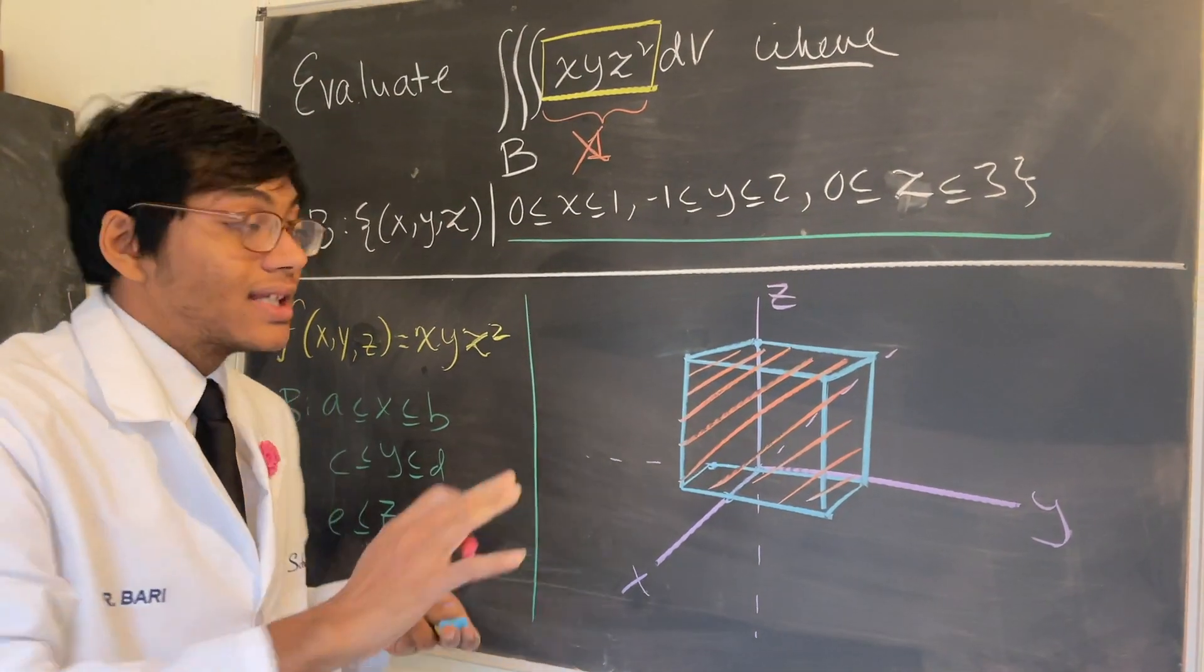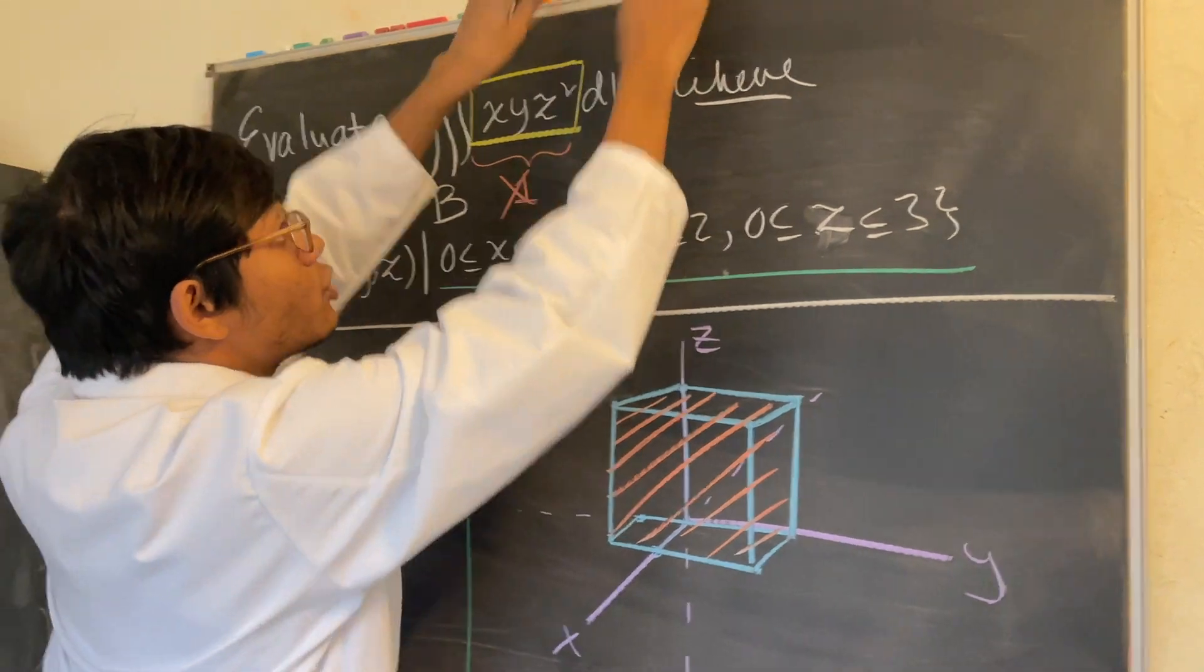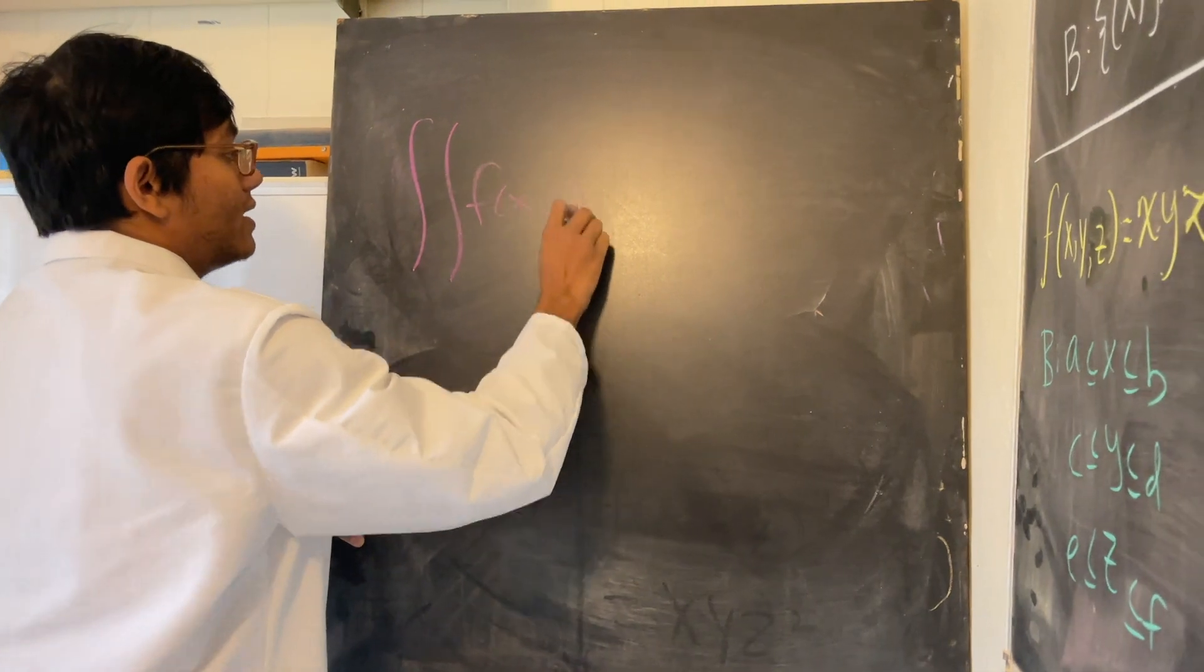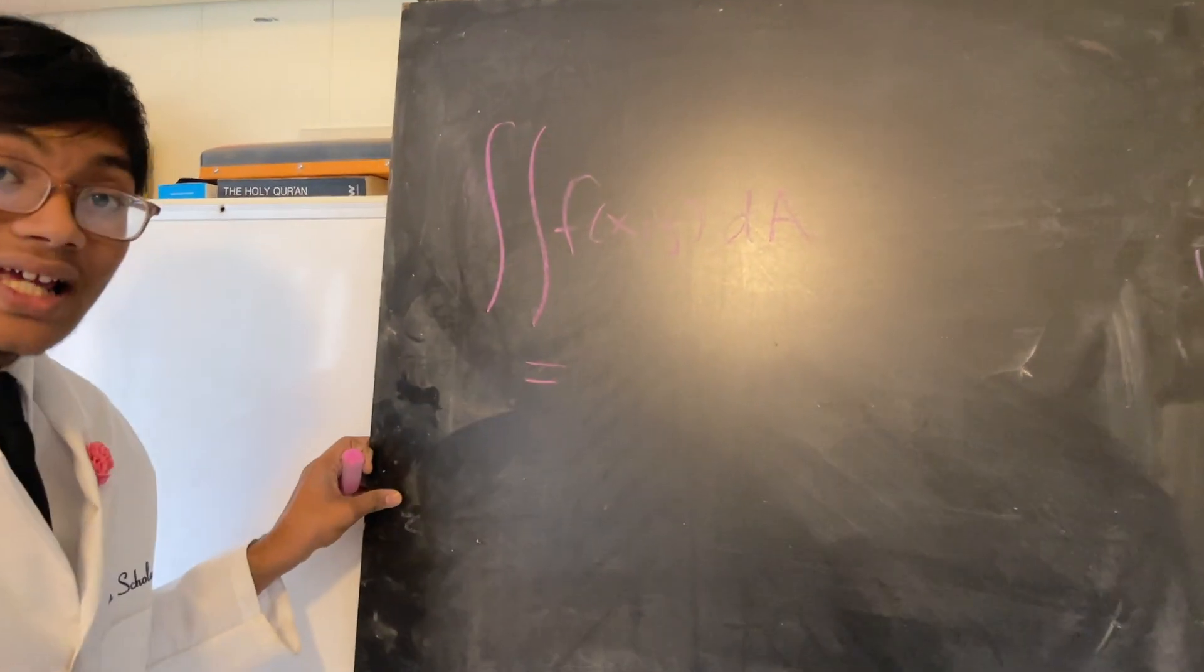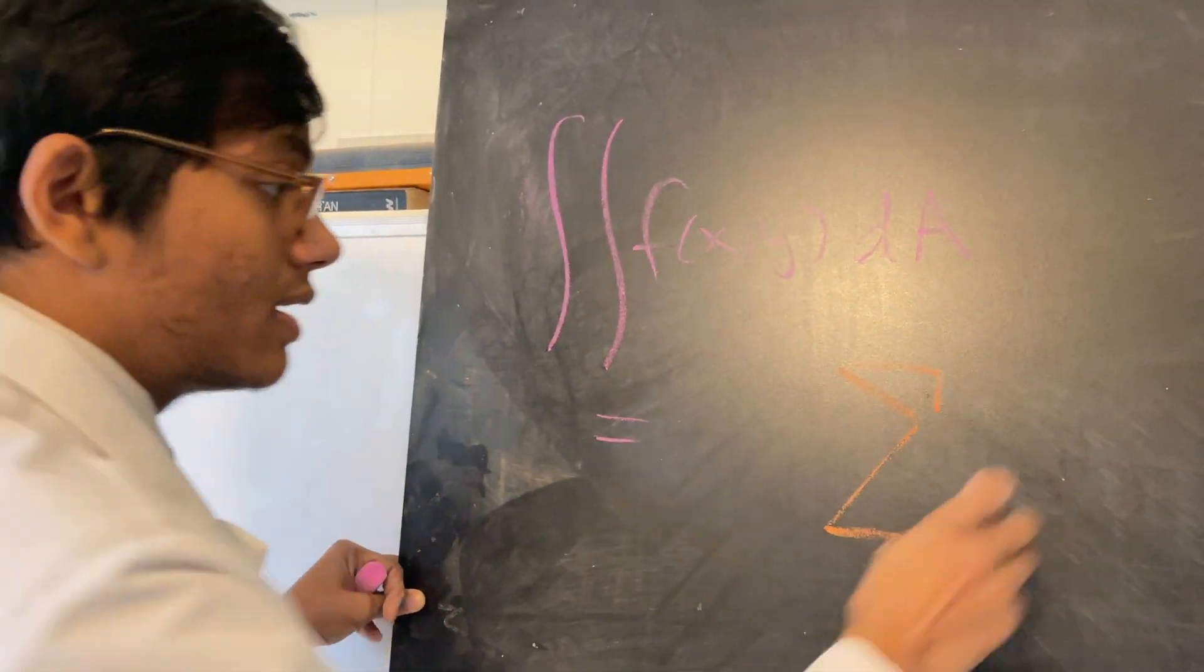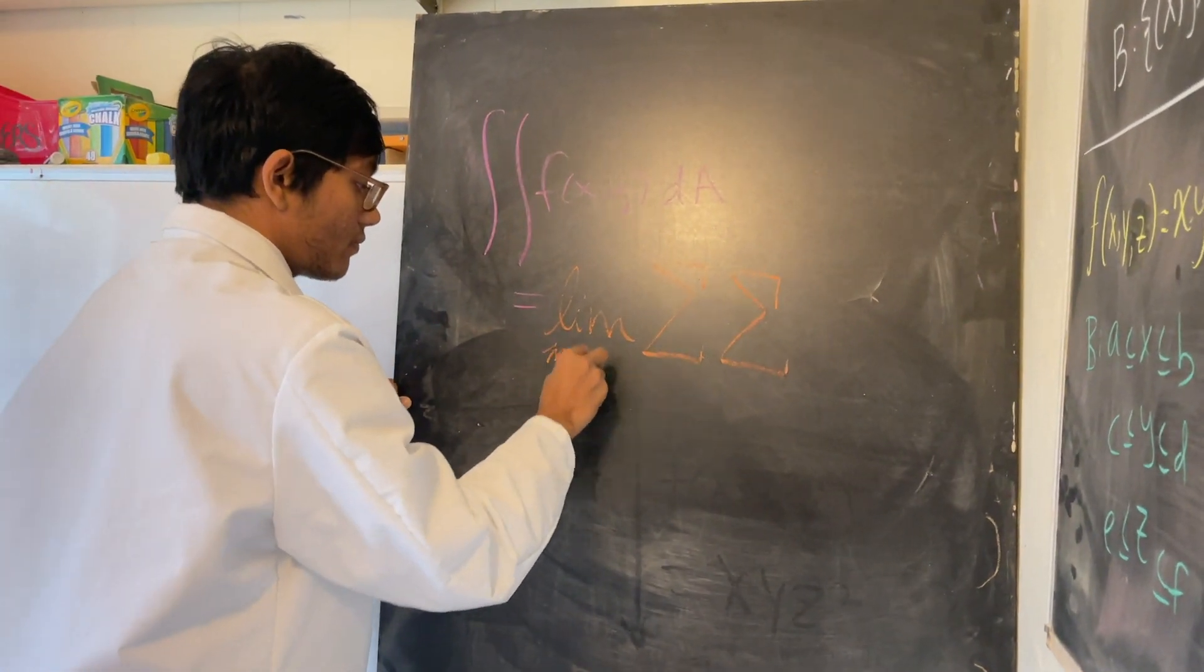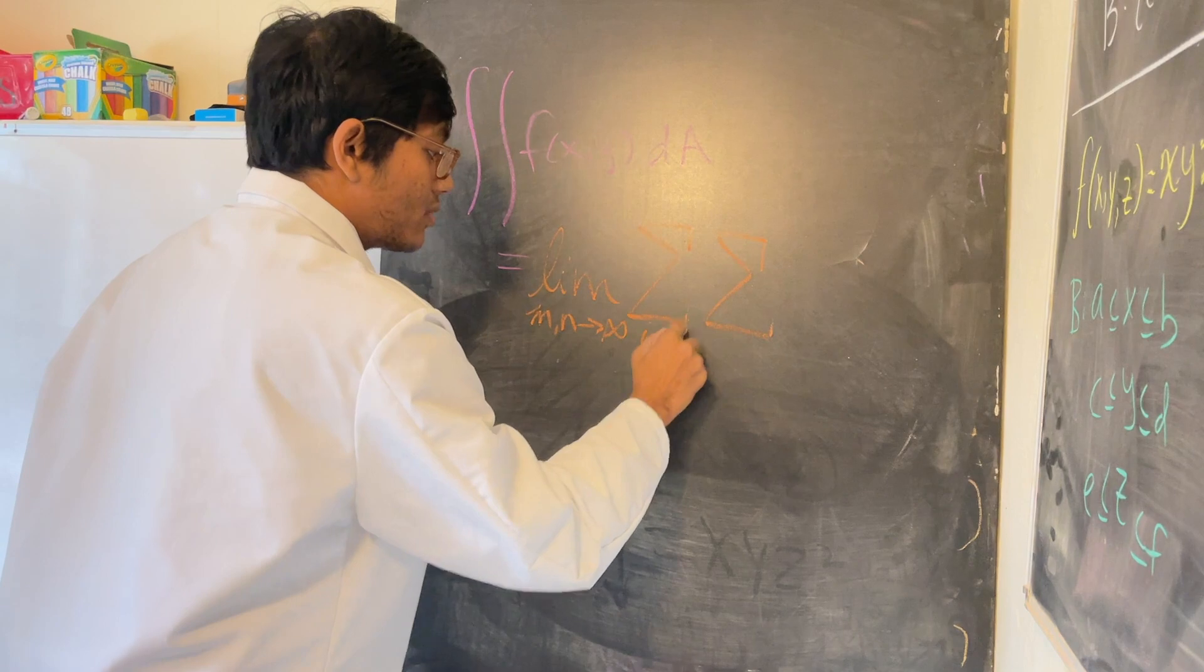Try to avoid thinking of triple integrals as volume. Now I want to give you an idea of how triple integrals are actually defined. We know that a double integral of f(x,y) dA is defined as a Riemann sum, but we're not just going to use one Riemann sum, we're going to use two because we have two integrals. We're going to take the limit of these Riemann sums as the number of partitions of our region approaches infinity.